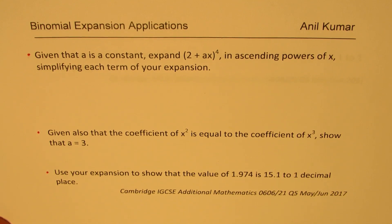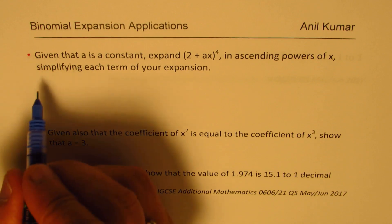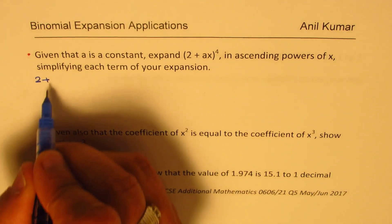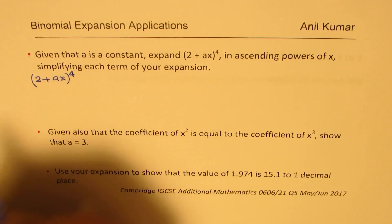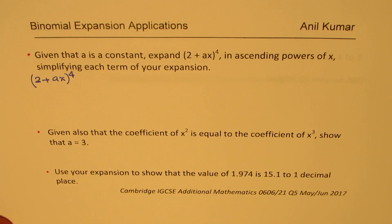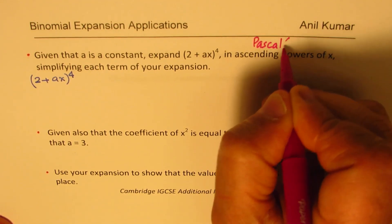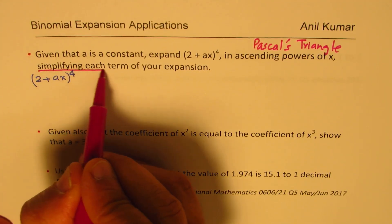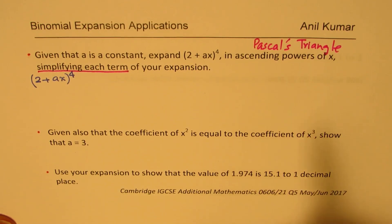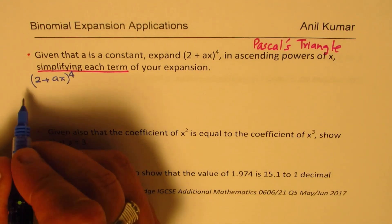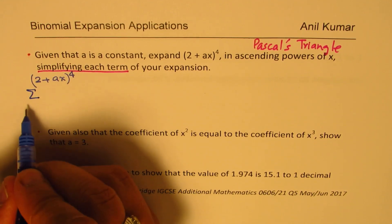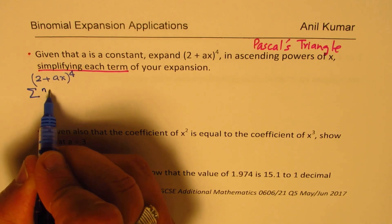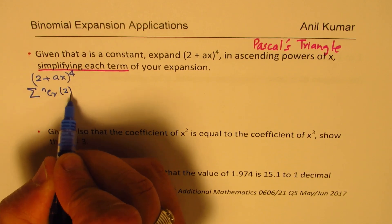Let's see how to solve this. We need to expand the binomial term (2 + ax)^4 — there are two terms inside. Since the powers are small, you could use the combination formula, or I suggest you can also use Pascal's triangle, which could be a better approach since we need to simplify each term. Pascal's triangle gives you the numbers directly, making it easier. Let me also share the standard way using combinations: nCr, where the first term is 2^(n−r).